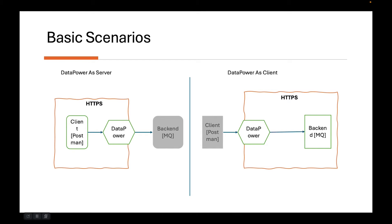There are two basic scenarios with DataPower as far as SSL and TLS are concerned. DataPower can act as a server or DataPower can act as a client. On the left hand side, you see a client like Postman invoking a service on DataPower — for example, a multi-protocol gateway or web service proxy. This is an example where DataPower is acting as a server.